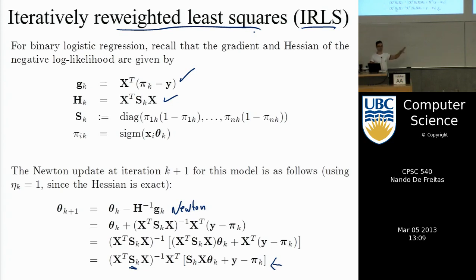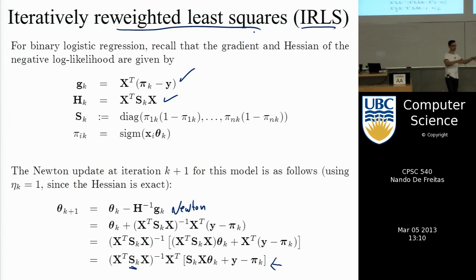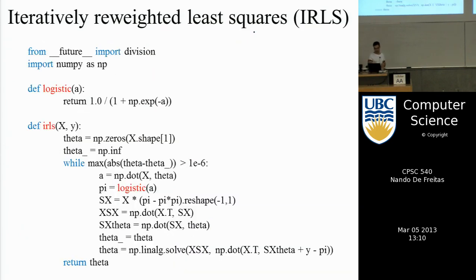The natural approach is to specify a likelihood, take the negative log, differentiate to get the gradient and Hessian — this is the approach you would use for any problem in machine learning, not just this model. When we do neural networks, we will follow exactly the same recipe: write the likelihood, find the derivative, and that gives the learning algorithm. Learning is just following the gradients, or following the gradients weighted by the Hessian. I've put the code in the slides — these algorithms end up being really simple to implement.